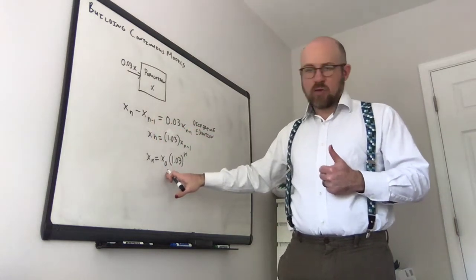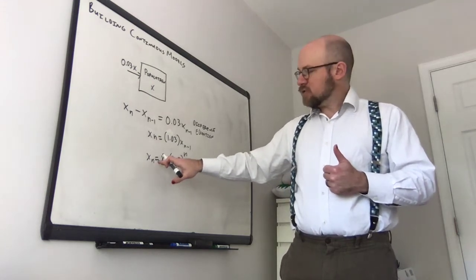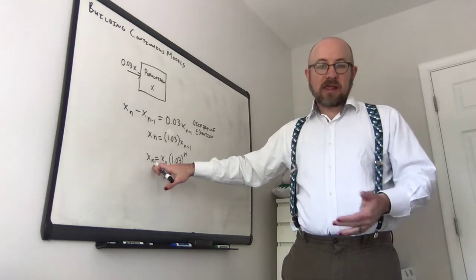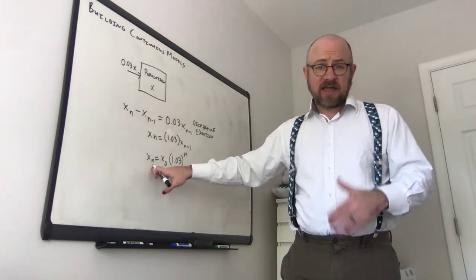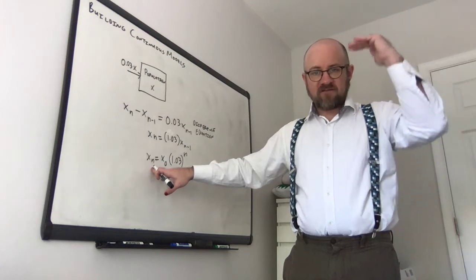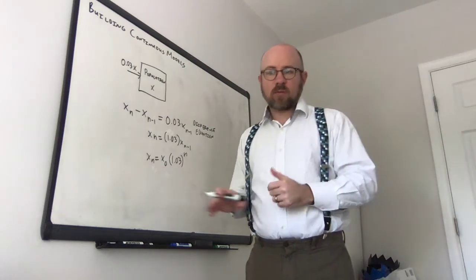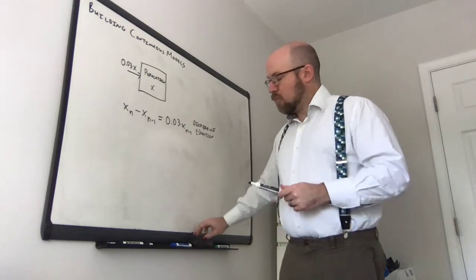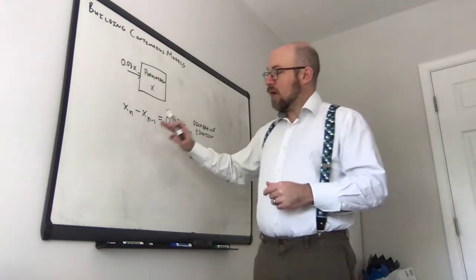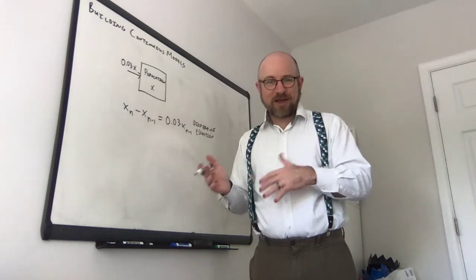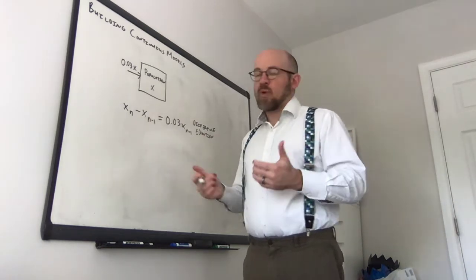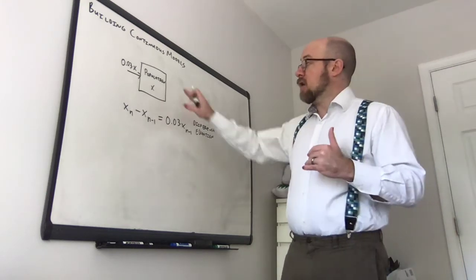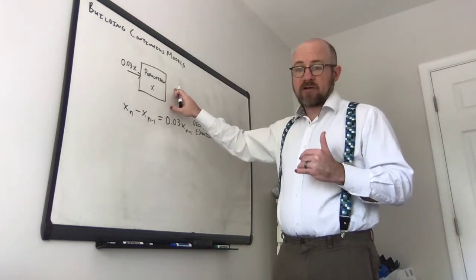This is a continuous model for the same situation, because even though you've got n in here, you could put in any number for n — it doesn't necessarily have to be 1, 2, 3, 4; it could be something like 1.5 or 1.6. So what we're going to talk about today is a more general model. In the simple exponential case we kind of know the answer, but what's the more general model for building continuous equations from something like a compartmental diagram?